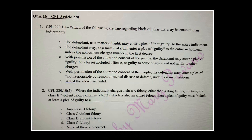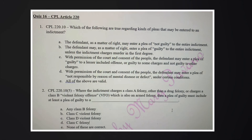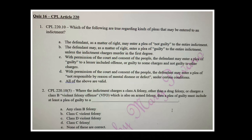With respect to mental disease or defect, it's with permission of the court and consent of the people that the defendant may enter a plea of not responsible by reason of mental disease or defect under certain conditions. Where the indictment charges a class A felony other than a drug felony, or charges a class B violent felony offense which is also an armed felony, then a plea of guilty must include at least a plea of guilty to a class C violent felony offense.